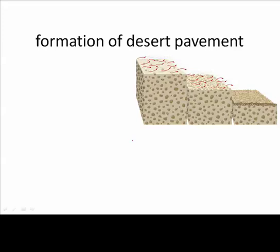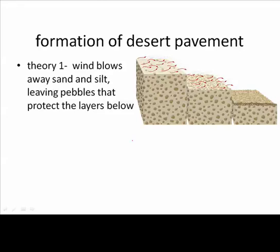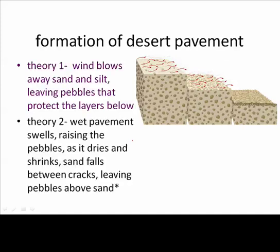Desert pavement. Most of the desert is not covered with sand dunes — it's covered with desert pavement. As you can see in this picture, desert pavement is simply a layer of pebbles too large to be blown away, but if you picked up one of those pebbles you would find sand underneath. The formation of desert pavement is still somewhat controversial. Theory one states that wind simply blows away the sand and silt, leaving the pebbles behind until there's an interlocking layer preventing further movement. The second theory says that as wet pavement swells, pebbles rise, and as it dries, sand falls between the cracks, leaving the pebbles above the sand. It's possible both theories describe what happens.